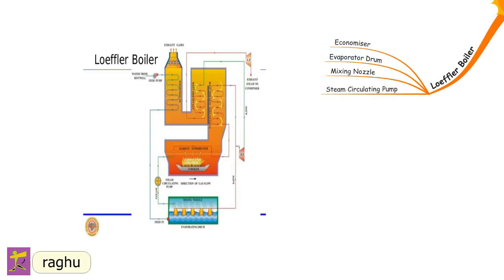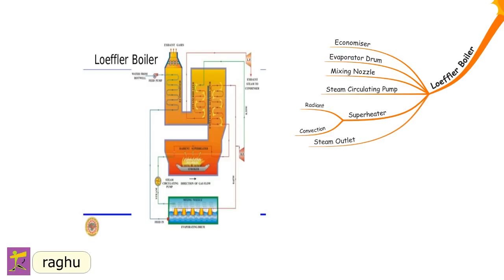The steam circulating pump forces steam from the evaporator drum to the radiant superheater. The radiant superheater, placed in the furnace, uses hot furnace gases to superheat the saturated steam from the drum. Steam from the radiant superheater then enters the convection superheater, where it is finally heated to 500°C. Both radiant and convection superheaters are arranged in series in the path of flue gases. One-third of the superheated steam from the convection superheater passes to the steam turbine, and the remaining two-thirds is passed back to the evaporator drum.